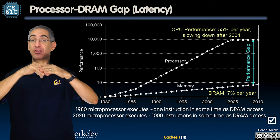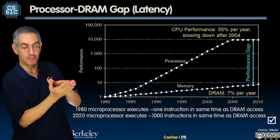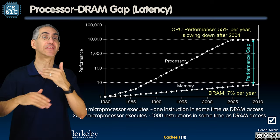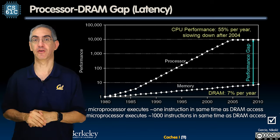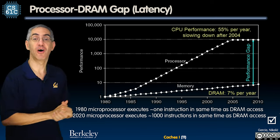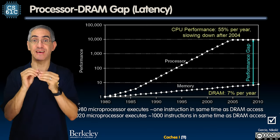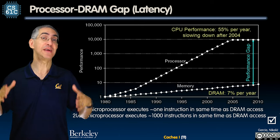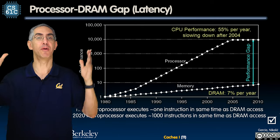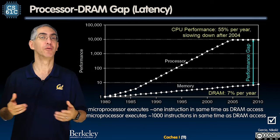This whole set of lectures is about dealing with that disparity between CPU speed and DRAM speed. In the next couple of lectures, we're going to see whether an idea called caches can resolve this problem. The big picture goal: can we be as fast as registers, but at the size of a hard drive — or even bigger than that?